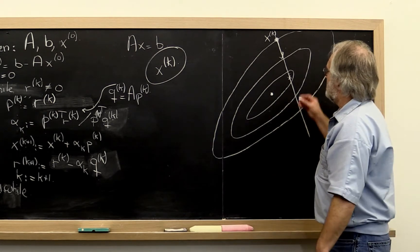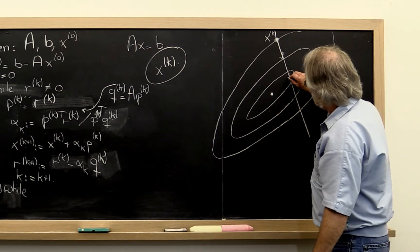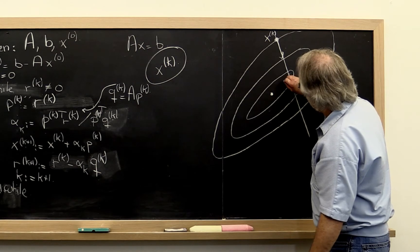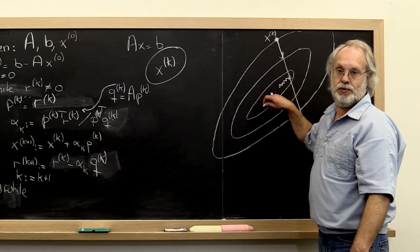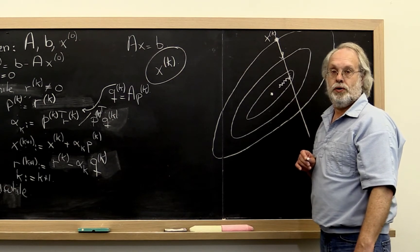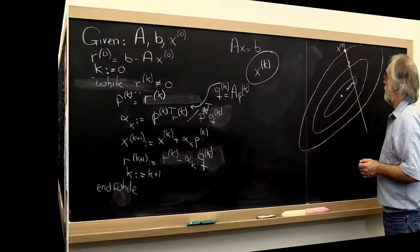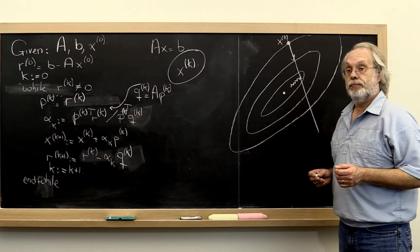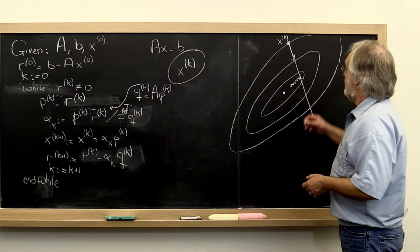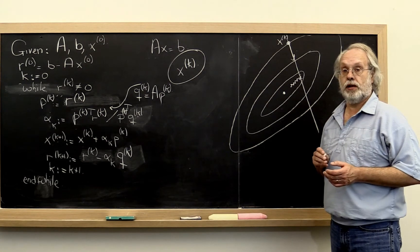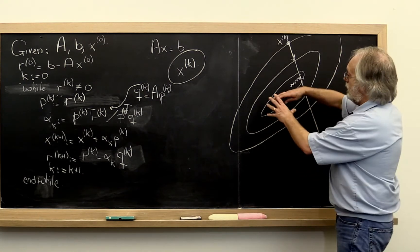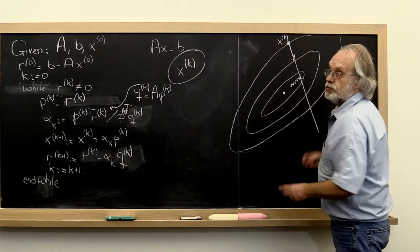But what actually happens is that the method of steepest descent starts bouncing back and forth like that. It takes a very long time to actually get to the minimum. Now the reason why the method of steepest descent starts bouncing back and forth like this is because of these elongated contours.